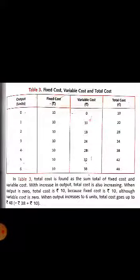One important thing - when output is zero, total cost is Rs.10. Total cost is present which is Rs.10 because of the fixed cost, because fixed cost is Rs.10 although variable cost is zero.